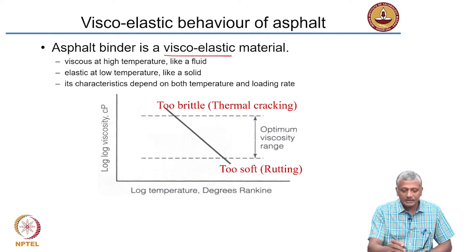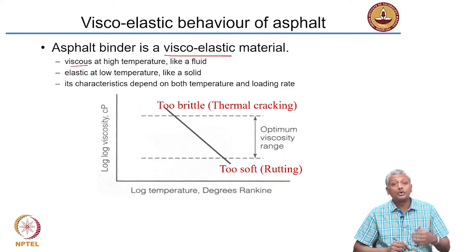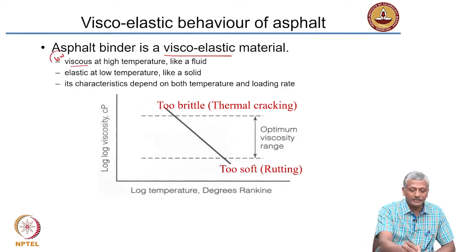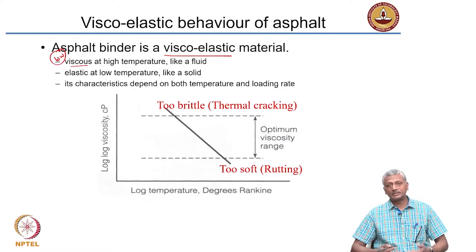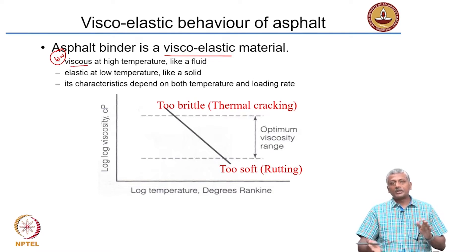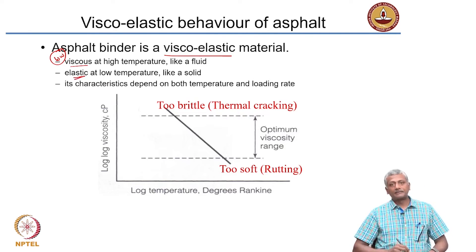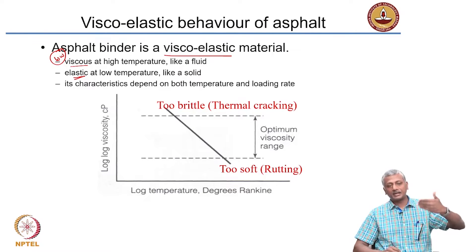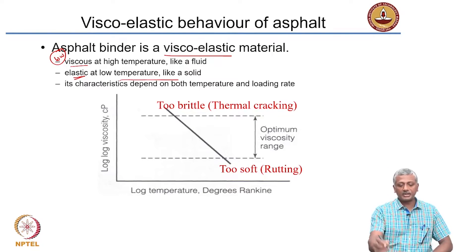Asphalt has a low viscosity at high temperature and behaves like a fluid — it flows easily. When you reduce the temperature, it becomes elastic, transitioning from viscous behavior to elastic behavior at low temperature, like a solid.